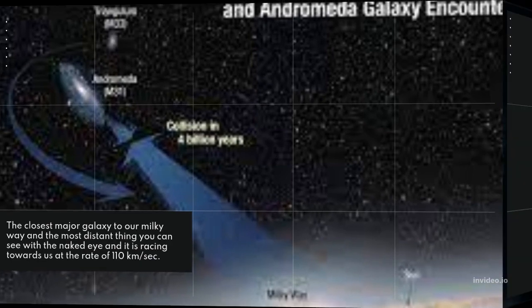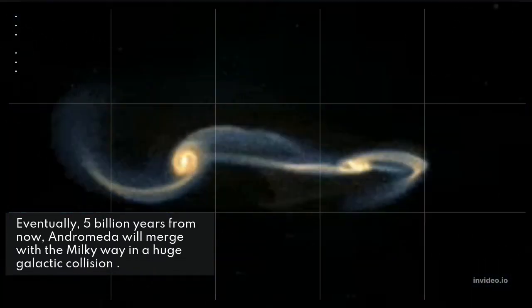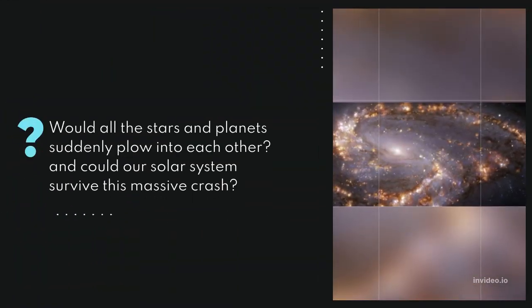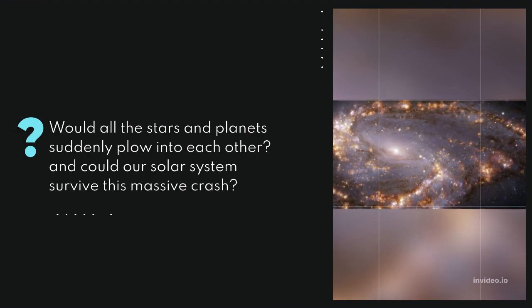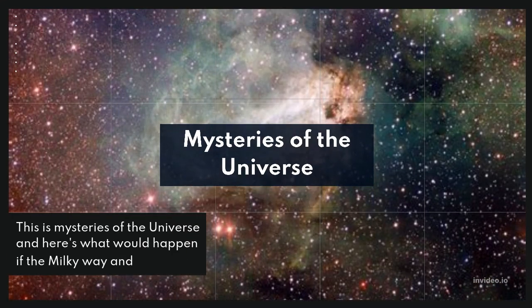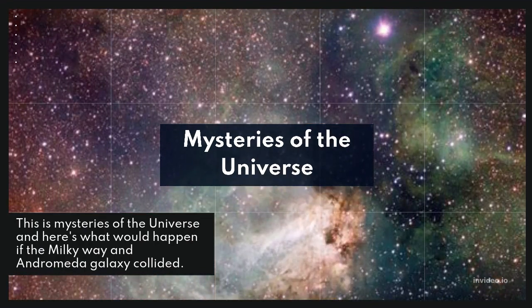Eventually, 5 billion years from now, Andromeda will merge with the Milky Way in a huge galactic collision. Would all the stars and planets suddenly plow into each other? Could our solar system survive this massive crash? This is Mysteries of the Universe, and here's what would happen if the Milky Way and Andromeda galaxies collided.